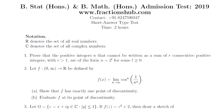Hello everyone. Today we will be discussing the first problem which came in BMath Beast 2019. The problem says that we have to prove that the positive integers that cannot be written as the sum of r consecutive positive integers, with r greater than 1, are of the form n equals 2 to the power l.